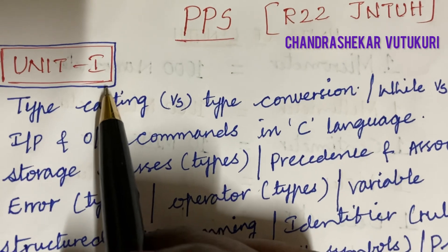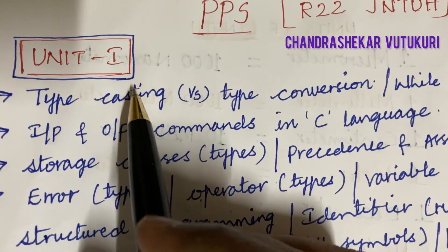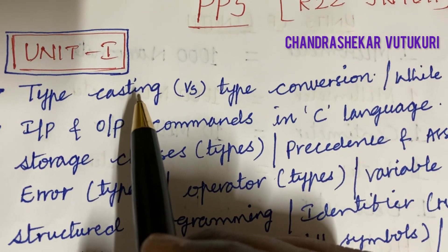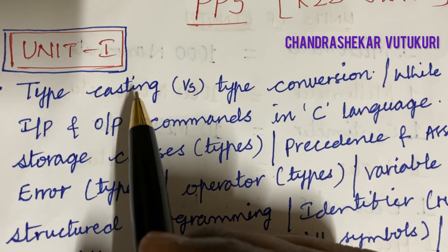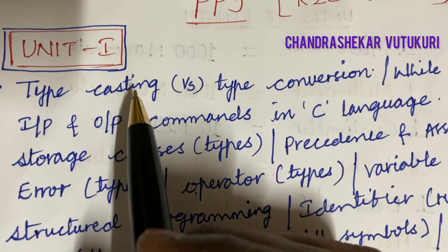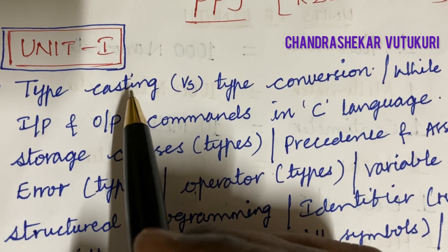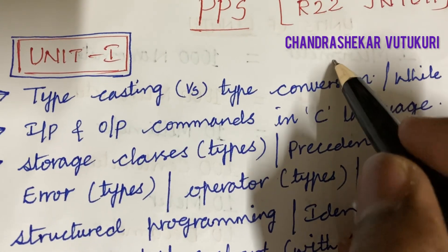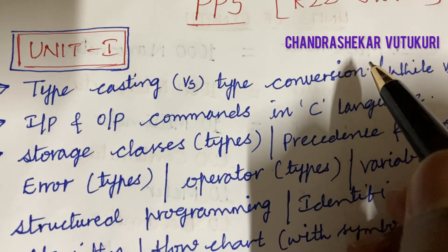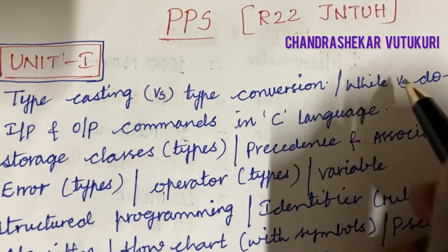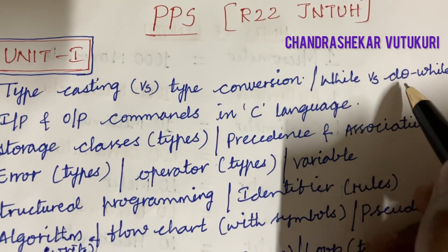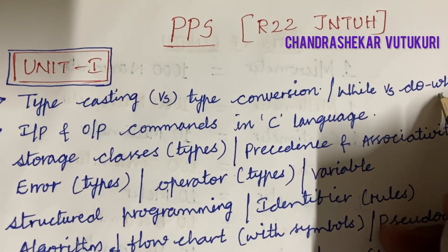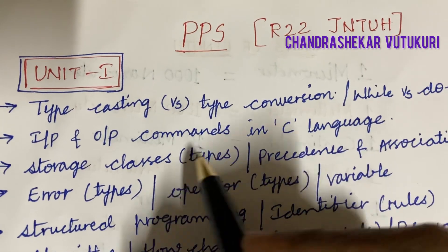The first and foremost unit I would like to highlight is Unit 1. Without the basic fundamentals of Unit 1 in PPS, you cannot work out the remaining units. Type casting versus type conversion and their differences is said to be the top most question, and while versus do-while is also said to be one of the one-mark questions.